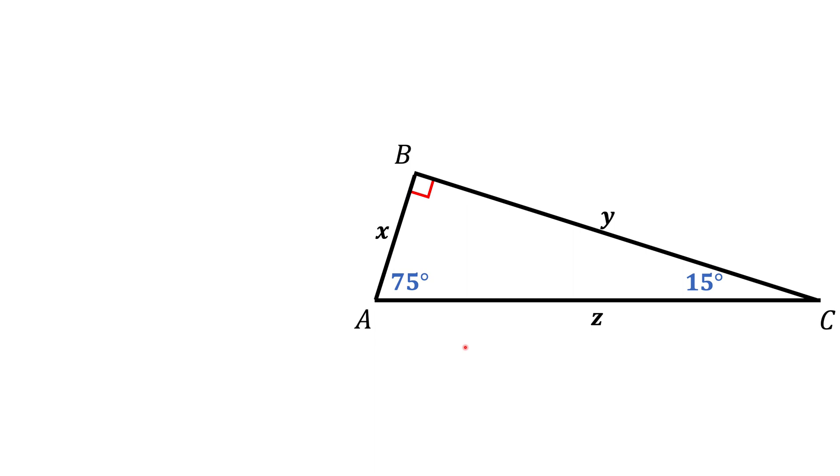Here we have a right triangle with angles of 15 and 75 degrees. We may know one of those three sides, x, y, and z, and we could be asked to find the other two.